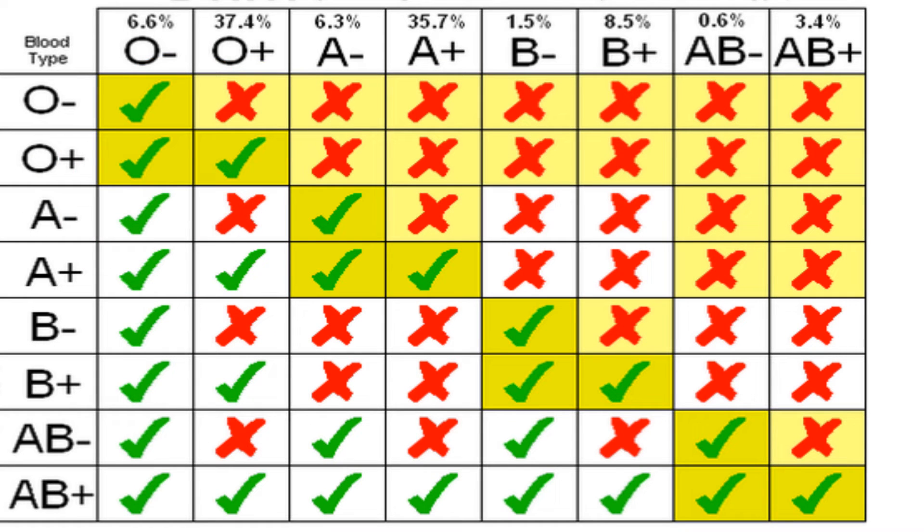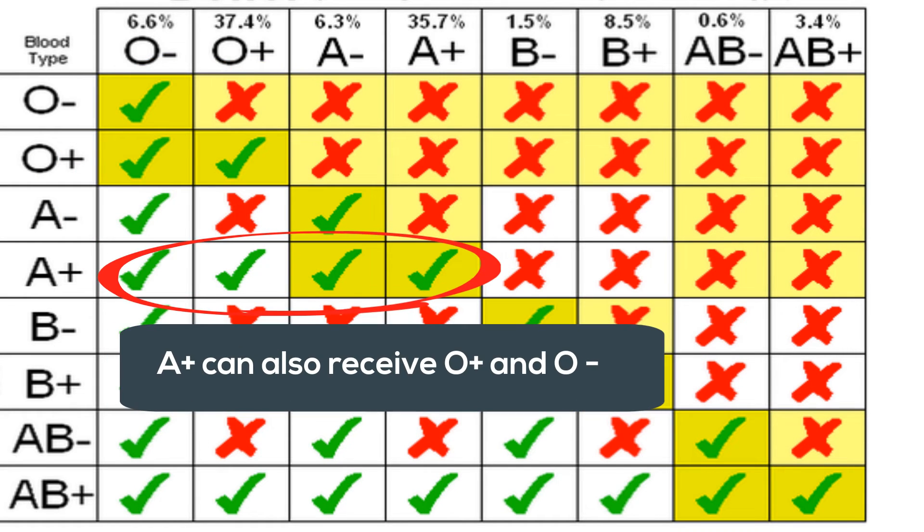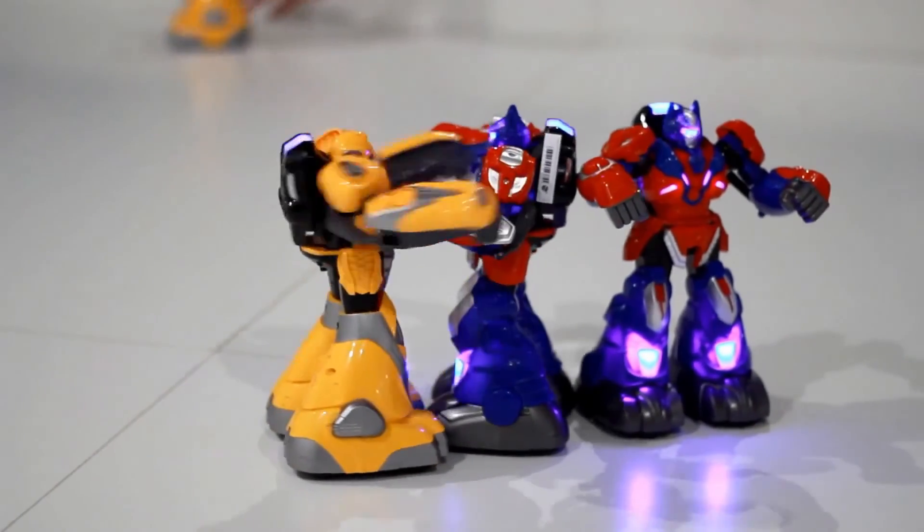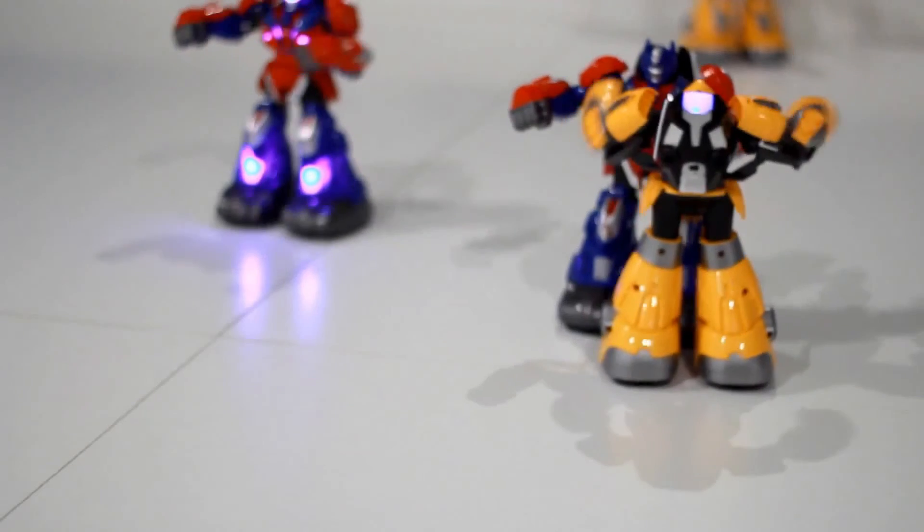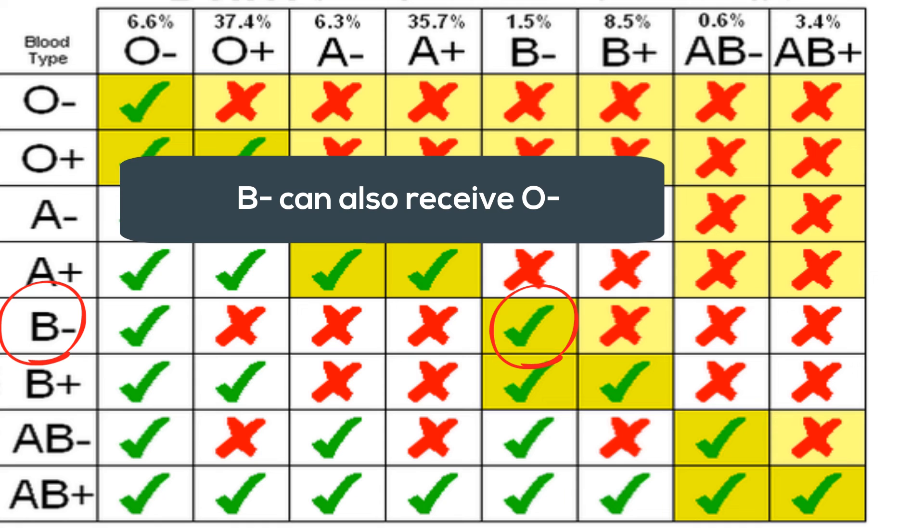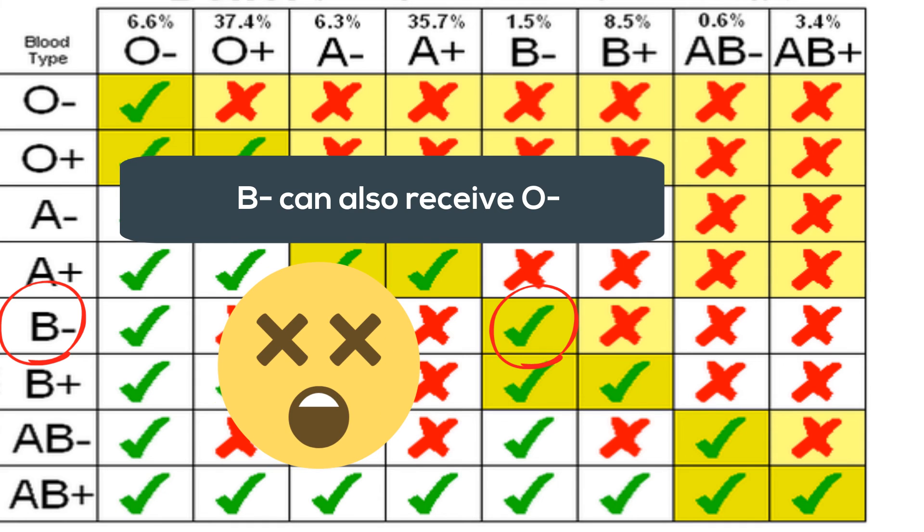So a person with type A blood, A positive, can receive A positive and A negative blood. However, if you are A negative, then you cannot receive RH positive blood because the RH positive antigens will trigger an immune response and antibodies will attack this. So if you are B negative, it is best if you receive B negative blood and not B positive blood because it could cause a very dangerous reaction.